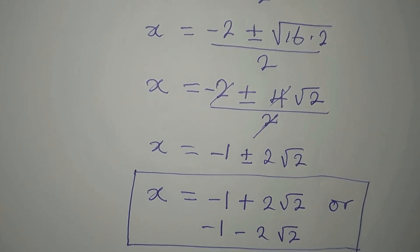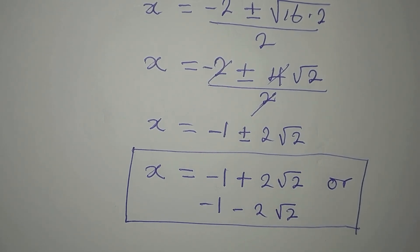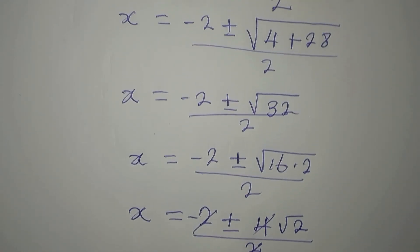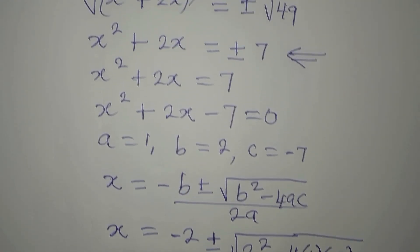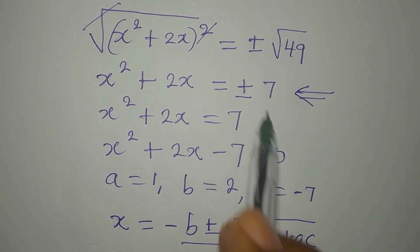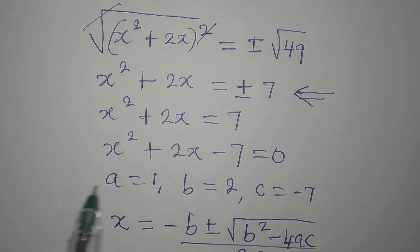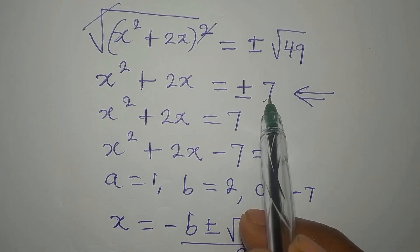So from here we have two solutions: x equals minus 1 plus root 2, and x equals minus 1 minus root 2. Both of them are real solutions. Now we need to go back to the other equation that we left out — let's take a look at the negative case.